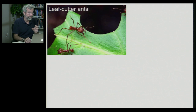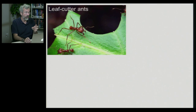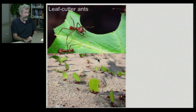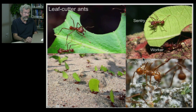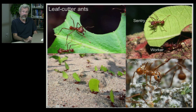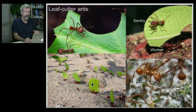Leaf cutter ants have a wonderful social system where workers go out and use very specialized pincers to cut segments of leaf. Others carry those sections back to the nest, while a sentry guards to prevent others from stealing the leaf. They take it back and put it into a fungus garden. Below ground, they cultivate fungus which can digest the cellulose in the leaf, and the ants thrive literally on a diet of mushrooms. An extraordinary division of labor with sentries, workers, and cutters — all at the service of a queen.